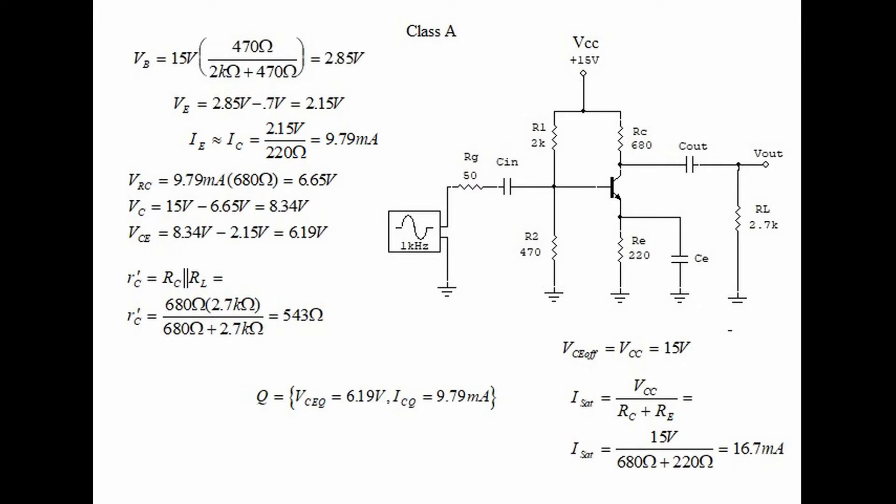Let's finish by calculating VCE off which is cutoff and that equals 15 volts, and also current saturation, the maximum current that can occur in the circuit, and that equals 16.7 milliamps.